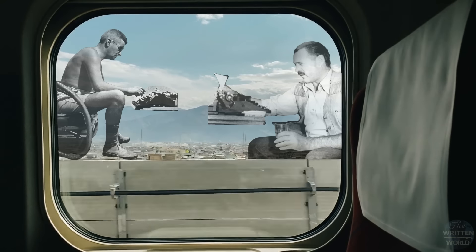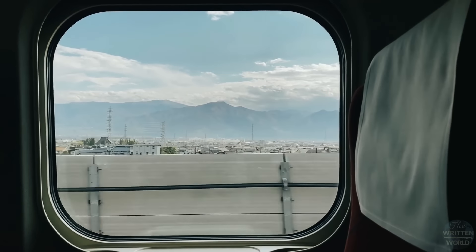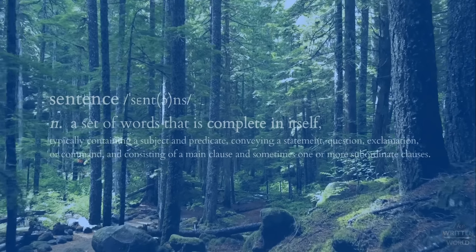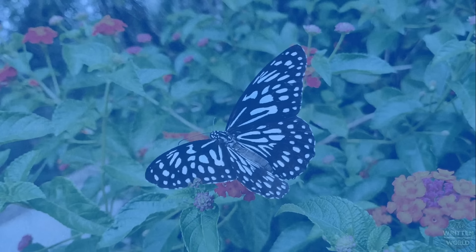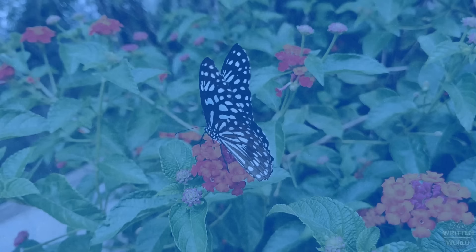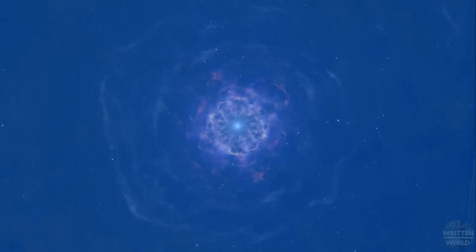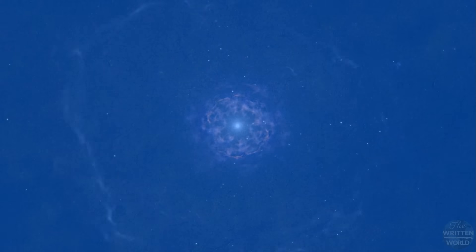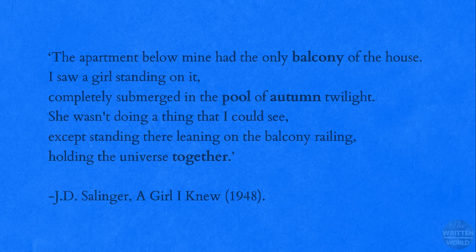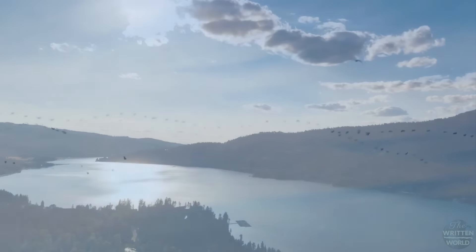If you ask why these two writers, the answer is because they serve as examples of the two acute ends of the spectrum of sentence structure. A novel, or even an epic, is made up of nothing but sentences. The sentence can be considered the fundamental unit of a work of literature — not the single solitary word, but the contextualized and unfolded unit of literary meaning. The single word could be argued as fundamental, but the words balcony, pool, autumn together are linguistic without being literary. In order for them to become literary you must expand and unfold their chosen meanings into a sentence, such as: "The apartment below mine had the only balcony of the house. I saw a girl standing on it, completely submerged in the pool of autumn twilight. She wasn't doing a thing that I could see, except standing there leaning on the balcony railing, holding the universe together."